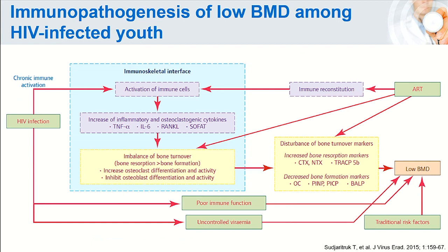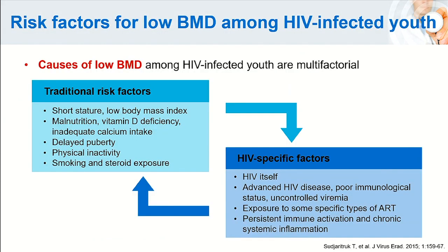Bone resorption may overcome bone formation, finally resulting in low bone mineral density. If these adolescents have poor immunological function as well as uncontrolled viremia, those two factors can directly impact low bone mineral density. For ART, the benefit of immune reconstitution comes along with increased inflammatory cytokines, which can result in an imbalance of bone turnover. The causes of low bone mineral density are multifactorial and can be classified into two categories: traditional risk factors and HIV-specific factors.